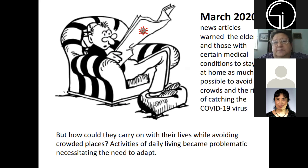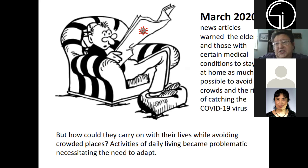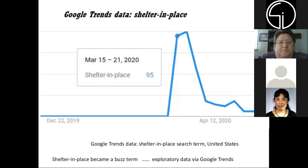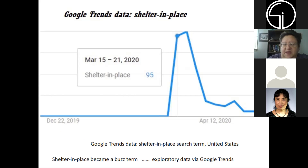In March 2020, news articles were saying that the elderly and individuals with various conditions should stay at home and avoid crowded areas. Of course, this caused complications in daily living. Here's an example of Google Trends for shelter-in-place, where it became a hot topic.